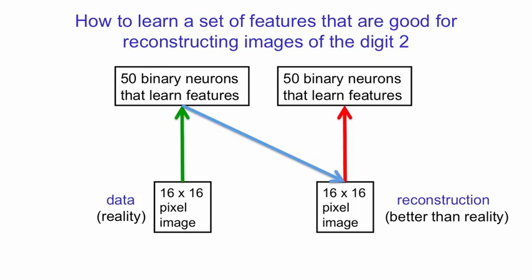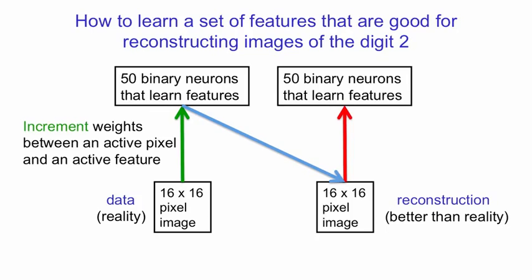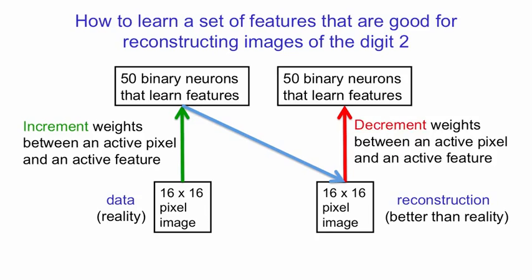The weights are changed by incrementing the weights between an active pixel and an active feature detector when the network is looking at data. And that will lower the energy of the global configuration of the data and whatever hidden pattern went with it. And it decrements the weights between an active pixel and an active feature detector when it's looking at a reconstruction, and that will raise the energy of the reconstruction.